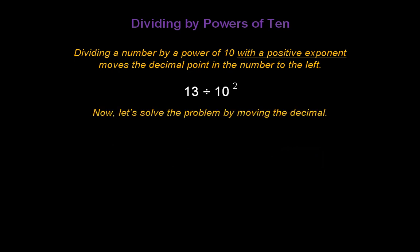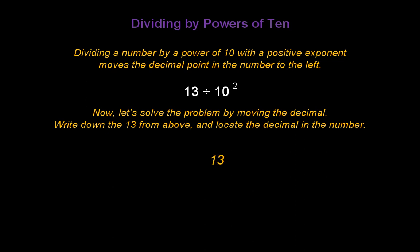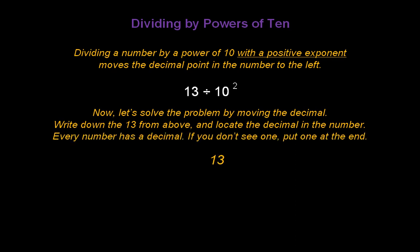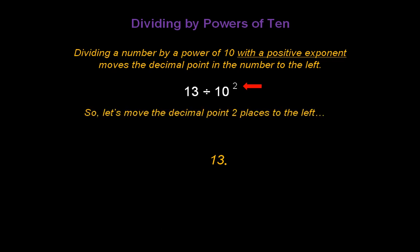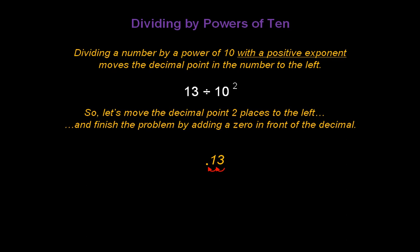Now let's solve the problem by moving the decimal. Write down the 13 from above and locate the decimal — remember, every number has a decimal, so if you don't see one, you put it at the end. The exponent 2 tells us how many times to move the decimal point to the left this time, because we're dividing. So let's move the decimal two places to the left: one, two. Finish the problem by adding a zero in front of the decimal. You should always put a zero in front of a decimal if there are no other numbers there. The answer is 0.13.